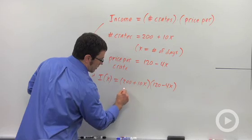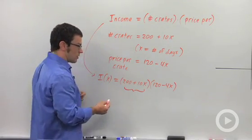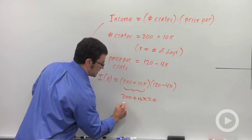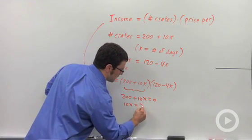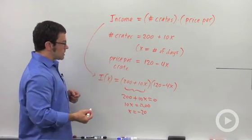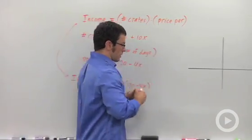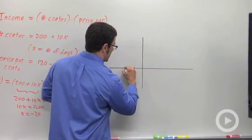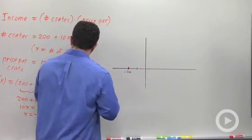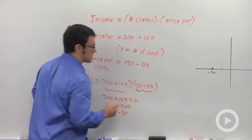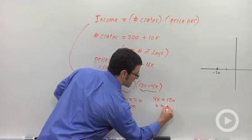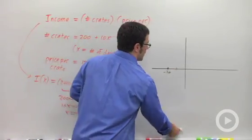One x-intercept is when 200 plus 10x equals 0, so 10x equals negative 200, and x equals negative 20. Let me mark that at negative 20. Another intercept comes from the second factor. When does 120 minus 4x equal 0? When x equals 30. So there's another intercept at positive 30.